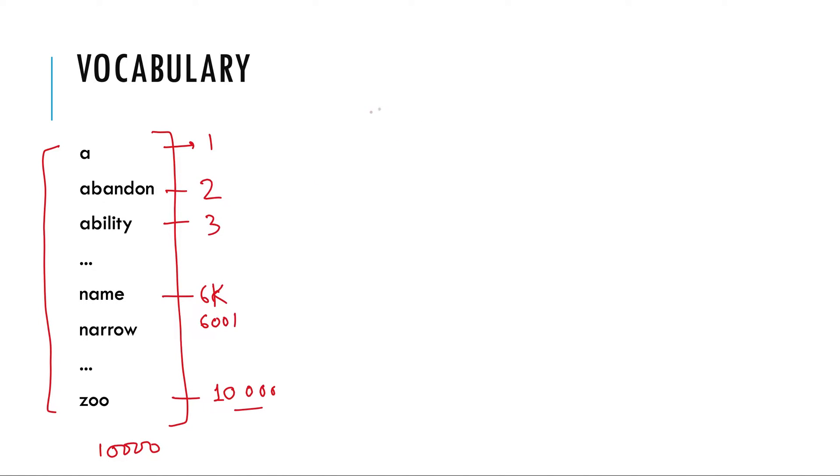So we need an embedding of each word. So the embedding matrix will be, let's say we want to represent each word with a 100 dimensional vector. Then this matrix will be 100 cross 10,000. And this A will come here, then abandon, and finally zoo.